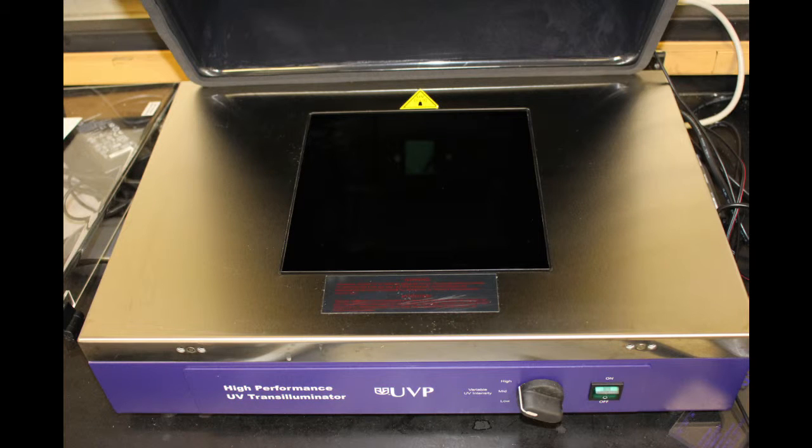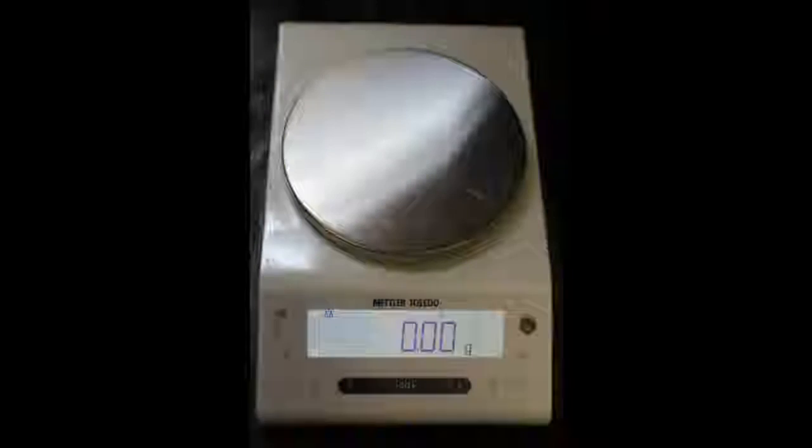Today, you'll learn how to create an agarose gel, load it with DNA, and run it. Different concentrations of agarose in a gel will affect the speed at which substances will traverse the gel. For this video, we'll be making a 1% gel.